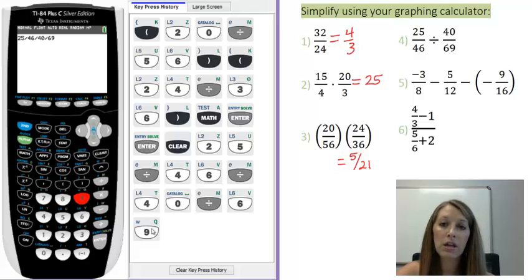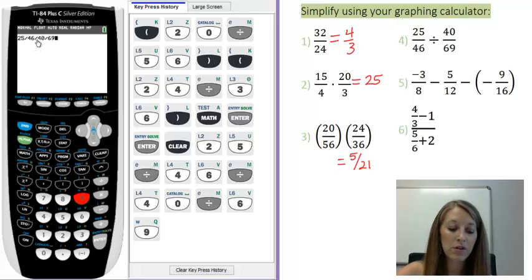Because it's going to do this division from left to right. It's going to take 25 divided by 46, and then whatever that is, divided by 40, and then whatever that is, and divide it by 69. So if you want to divide two fractions on the calculator, you're actually going to have to insert in parentheses. So let me go ahead and do that here.